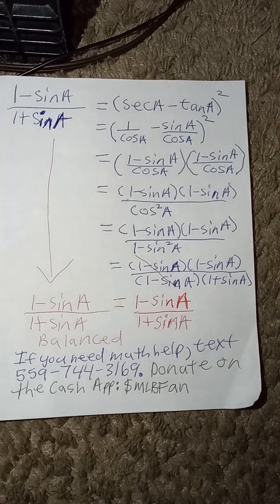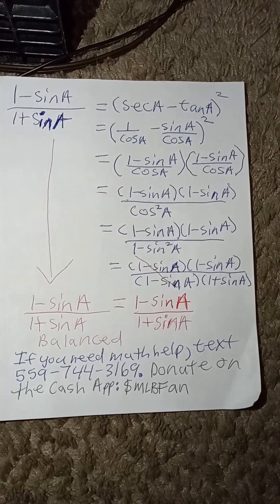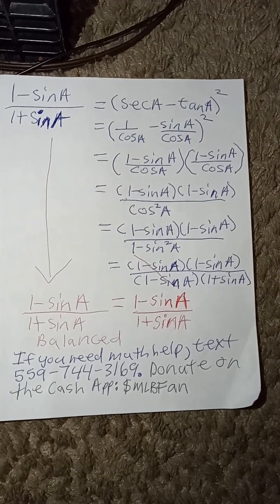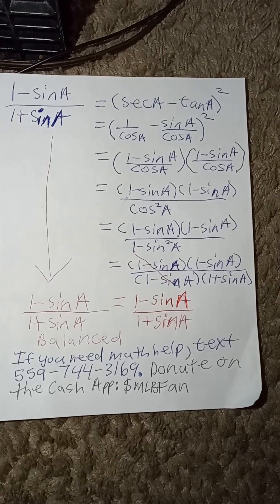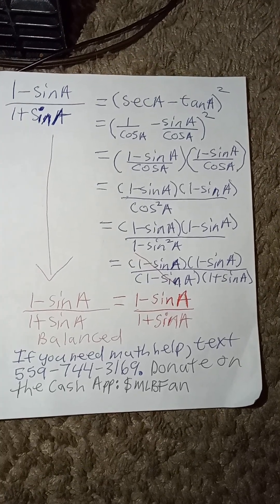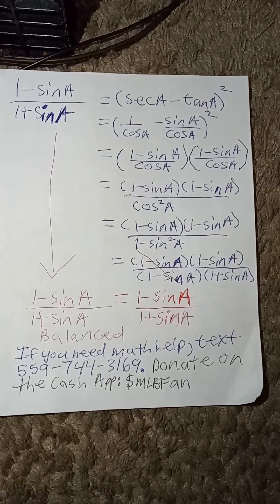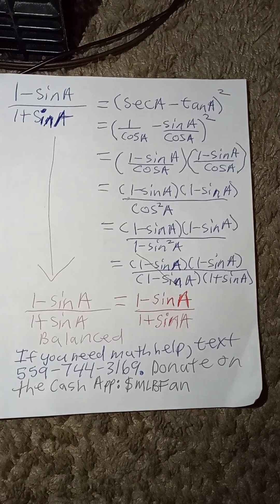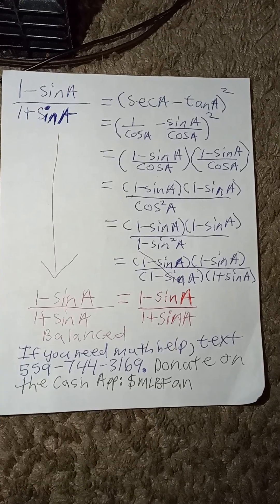So, now we can rewrite this as 1 minus sine a times 1 minus sine a, divided by 1 minus sine a times 1 plus sine a. The denominator was factored using the difference of squares.